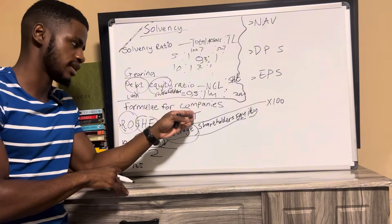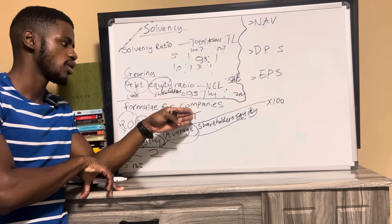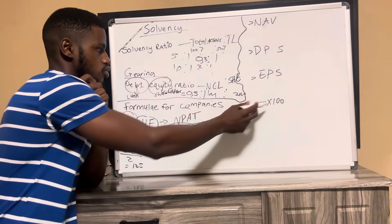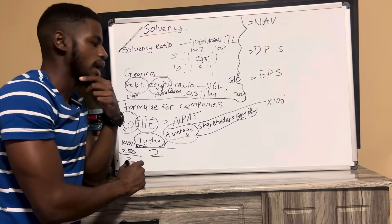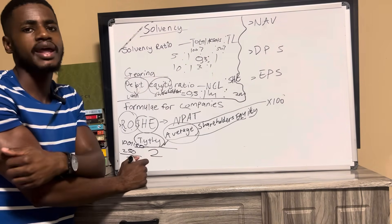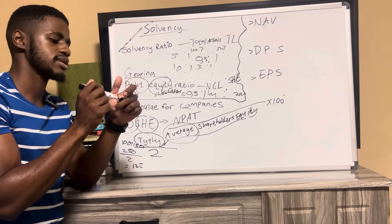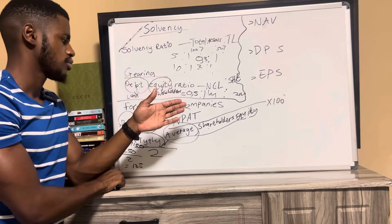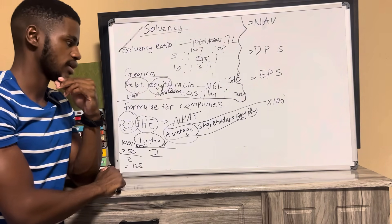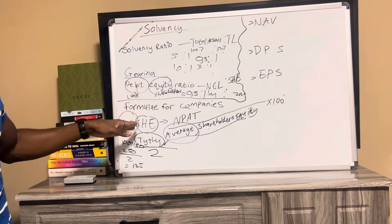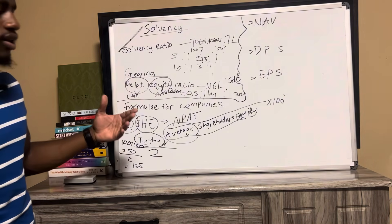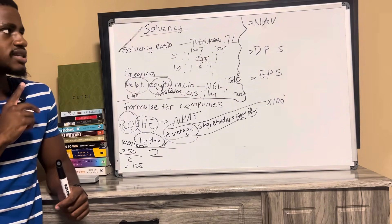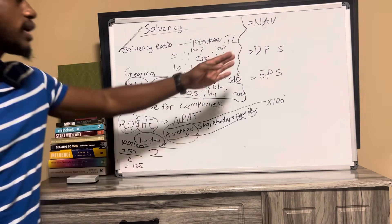Net profit after tax we've covered extensively, so that shouldn't be a problem. After substituting net profit after tax and average shareholders' equity, multiply by 100 to get the percentage showing how much return, on average, the shareholders are receiving. That is return on shareholders' equity.